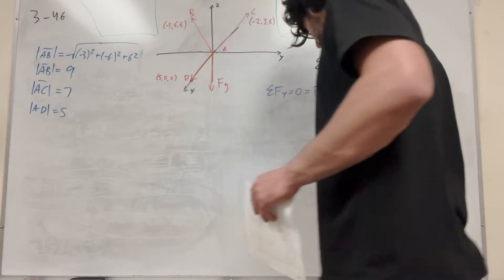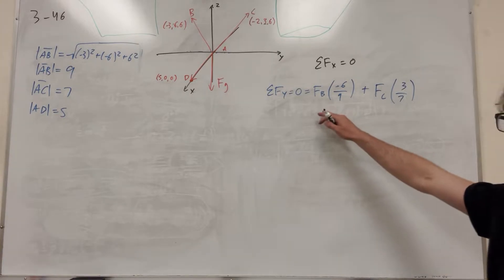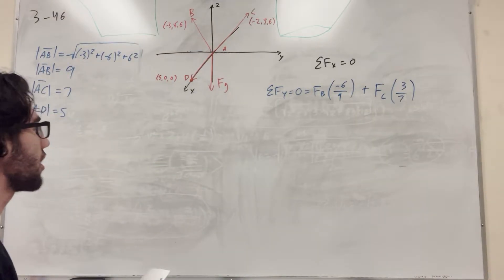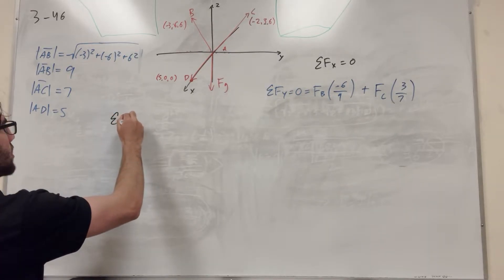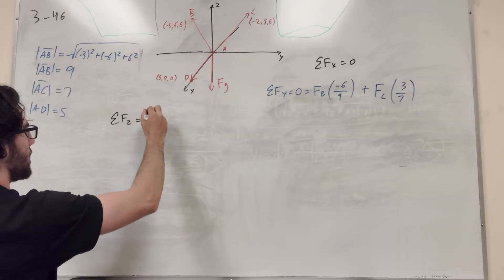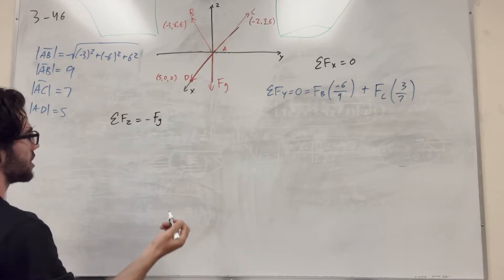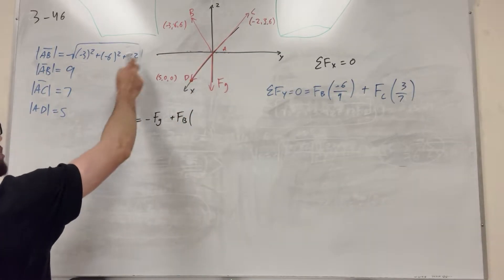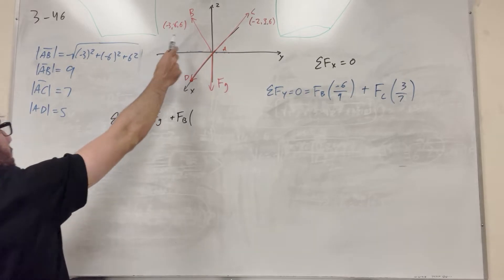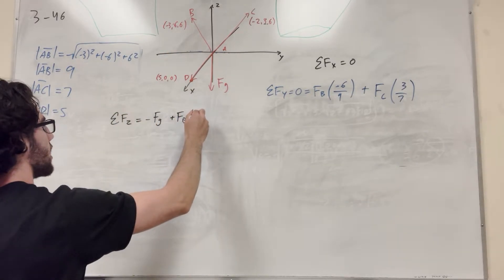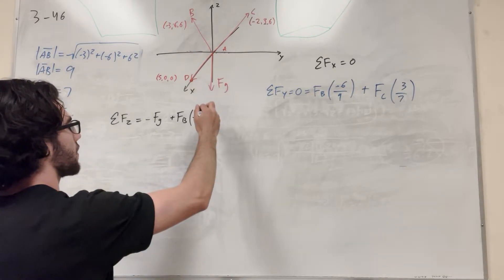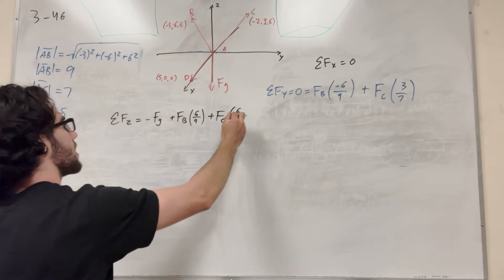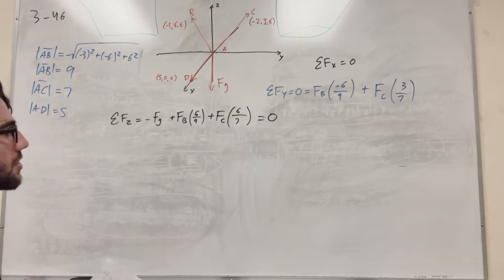Now let's do the z direction. Sum of forces in z equals zero. We have negative force of gravity, which is 300 pounds, pulling down. Then plus force B times six over nine, since it goes six feet up in z and its hypotenuse is nine. Plus force C times six over seven, since it goes six in z and its hypotenuse is seven. This equals zero. Now we have two equations and two unknowns, so we can solve.